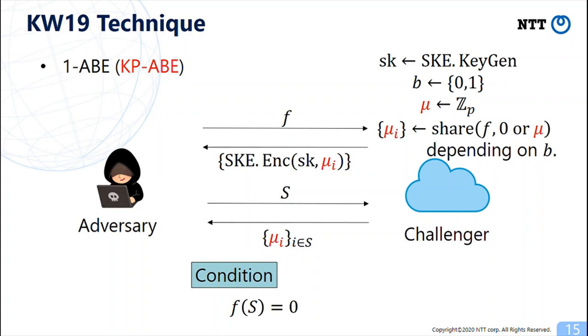And if mu_i means shares of 0, they correspond to a normal secret key and otherwise they correspond to a semi-functional secret key.